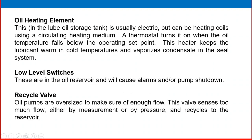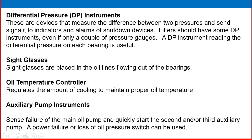A recycle valve is provided since oil pumps are oversized to ensure sufficient flow — this valve senses excess flow by measurement, pressure, or recycles back to the reservoir. Differential pressure instruments measure the difference between two pressures and send signals to indicators, alarms, or shutdown devices. Filters should have DP instruments, and measuring differential pressure across each bearing is useful. Side glasses are also used.